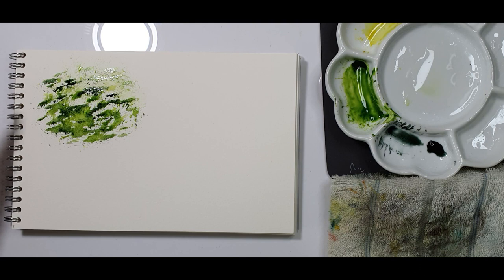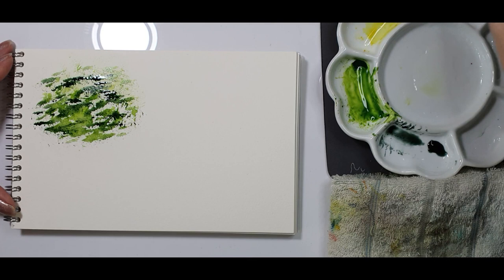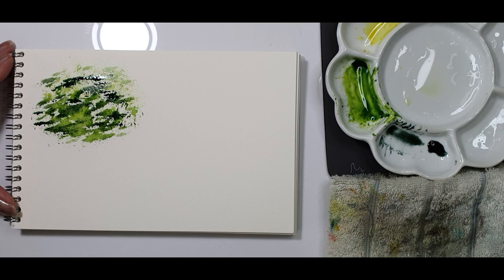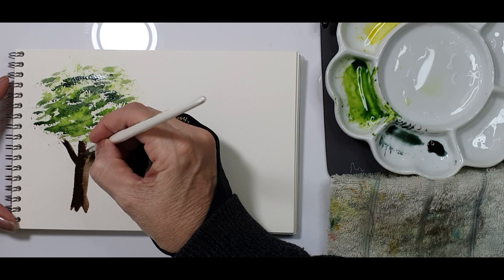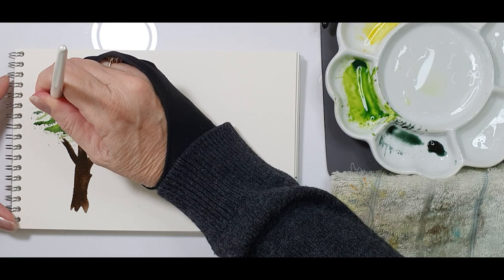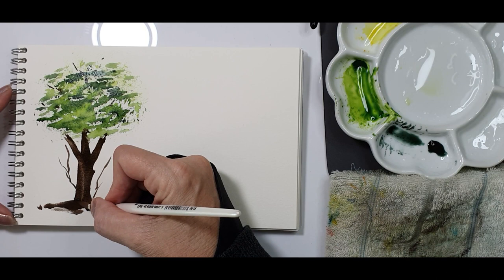I've used sap green and shadow green here on the sides of the brush and then just dab it down very lightly. Just to give my tree some life and perspective I quickly drew in the trunk and a branch or two. Quick and easy tree.